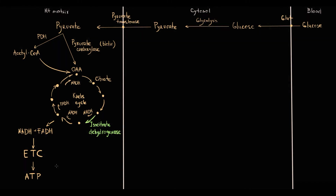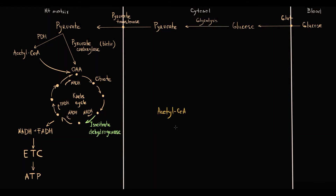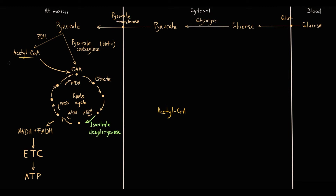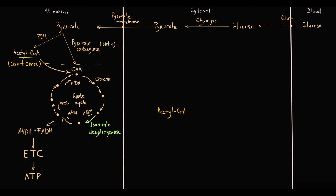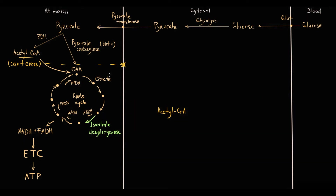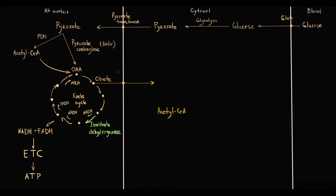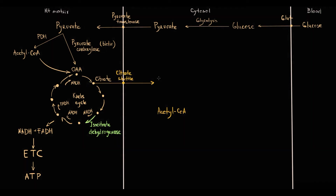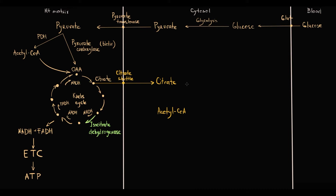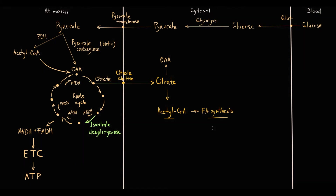Fatty acid synthesis occurs in the cytosol, and its substrate is acetyl-CoA. However, mitochondrial membranes have no transporters for acetyl-CoA, so it cannot cross directly. The solution is that citrate can cross mitochondrial membranes via the citrate shuttle. Citrate leaves the mitochondrial matrix and enters the cytosol, where it is cleaved into oxaloacetate and acetyl-CoA. This is how acetyl-CoA, the substrate for fatty acid synthesis, is delivered to the cytoplasm.